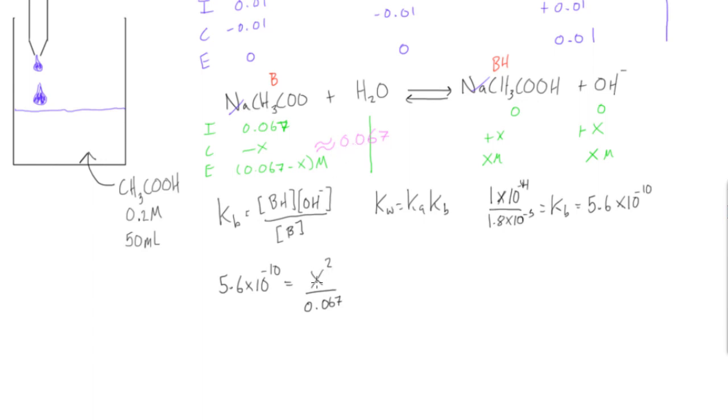If we just solve for x, 5.6 times 10 to the negative 10 times 0.067, take the square root of that, we're going to find that x is equal to 6.1 times 10 to the negative 6.